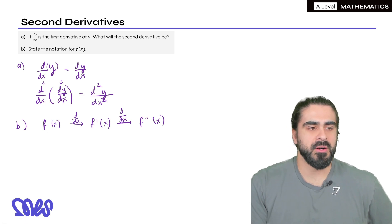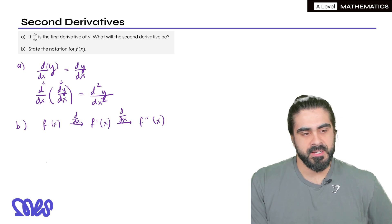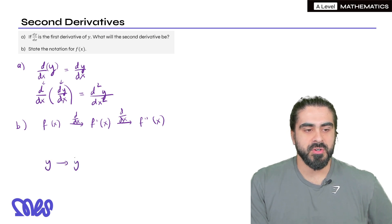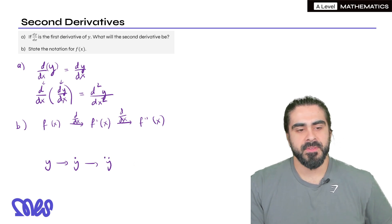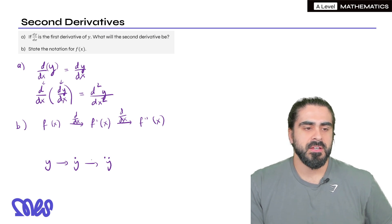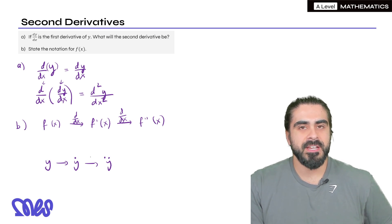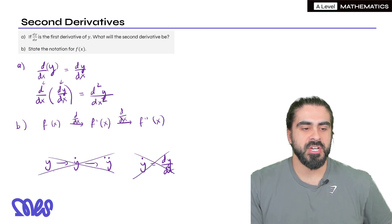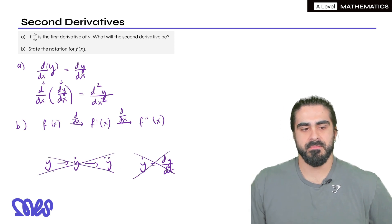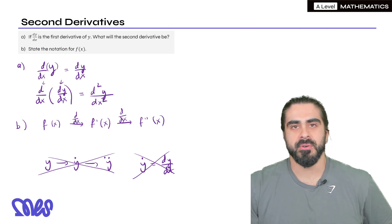Some students ask about dots on the y — what does ẏ mean, and what does ÿ mean? I would say be very careful with these. They are mostly used in mechanics and physics. The dots on top really mean differentiation with respect to t, so ẏ would actually mean dy/dt. I'd say leave those separate to mechanics and be careful using dots interchangeably with pure maths.